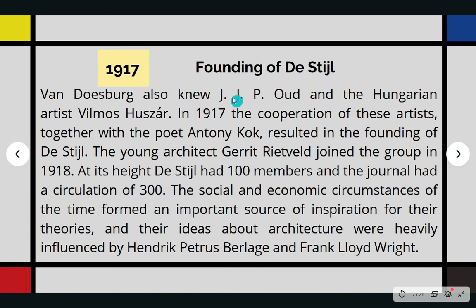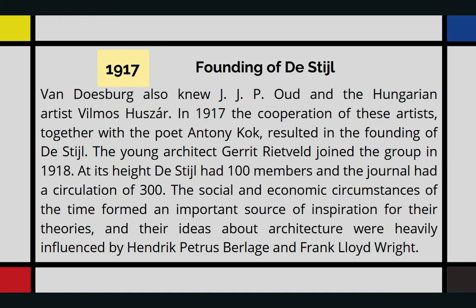In 1917 came the founding of De Stijl. Van Doesburg, also known as J.J.P. Oud, and the Hungarian artist Vilmos Huszár — in 1917, the cooperation of these artists together with the poet Anthony Kok resulted in the founding of De Stijl. The young architect Gerrit Rietveld joined the group in 1918. At its height, De Stijl had 100 members, and the journal had a circulation of 300.